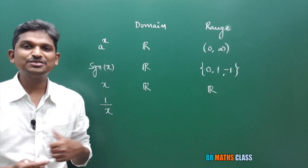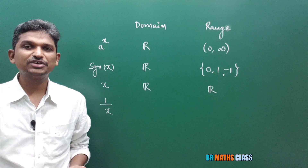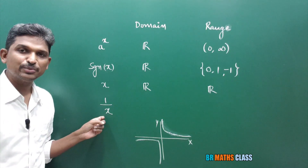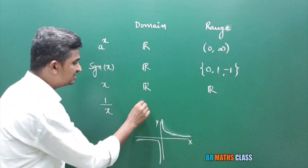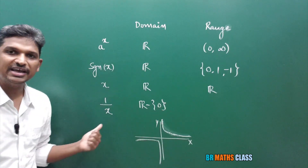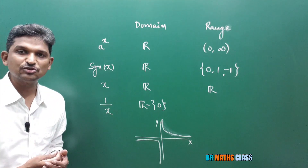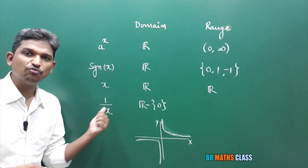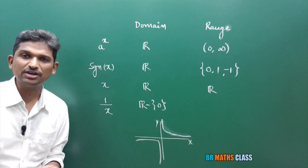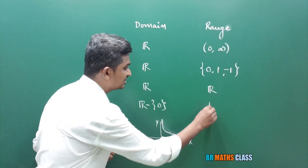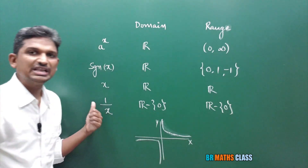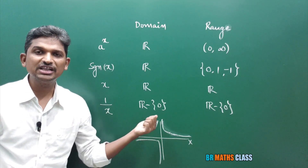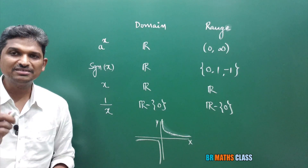Now, the reciprocal function f(x) = 1/x. The graph of the reciprocal function is a hyperbola. Since it is of the form f(x)/g(x) and g(x) cannot be 0, the domain of 1/x is all real numbers except 0. For the range, 1/x will never give you 0 — because 1 divided by infinity is 0, but infinity is not defined. So the range of 1/x is also all real numbers except 0.